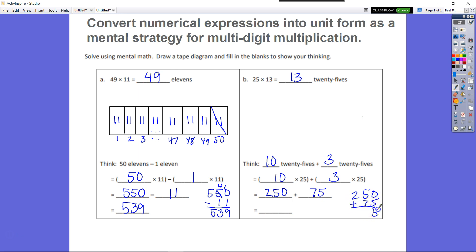5, 2 tens. Regroup my 10 tens is 100, and we have 325.